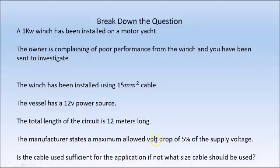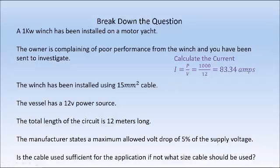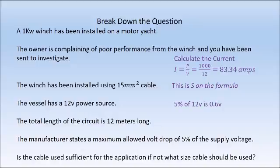We need to break down our question and find the data we need. We need to calculate our current — same as previously, power divided by volts equals current. 1,000 divided by 12 gives us a current draw of 83.34 amps. This time we want to find the volt drop, so we need to input the cable size — in this installation we'll use S in the formula, which is our cable size, so we input 15 millimeters squared. The vessel has a 12-volt power source, the circuit is 12 meters long — and as it says total length, you don't need to double it. The manufacturer states a maximum allowed volt drop of 5%, so 5% of 12 volts is 0.6 volts.